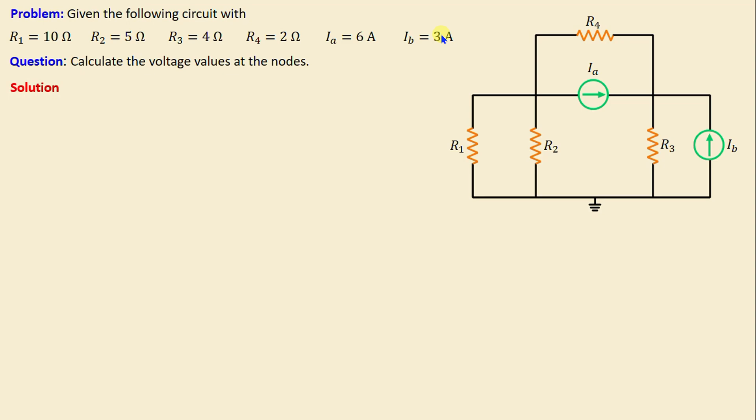Let's start by labeling all the nodes in the circuit. I will consider this node as node 1 and this node as node 2. We will assign the voltages V1 and V2 respectively to those two nodes.